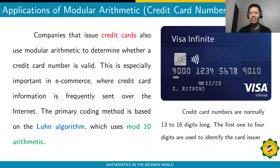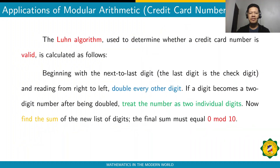The primary validation method is based on the Luhn algorithm, which uses Modulo 10 arithmetic. Credit card numbers are normally 13 to 16 digits long. The first one to four digits are used to identify the card issuer. The Luhn algorithm is used to determine whether a credit card number is valid, and it is calculated as follows.